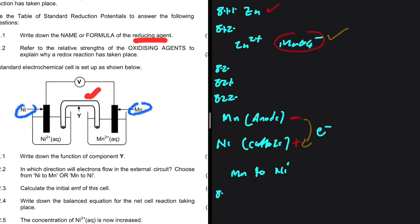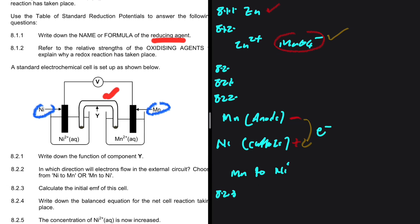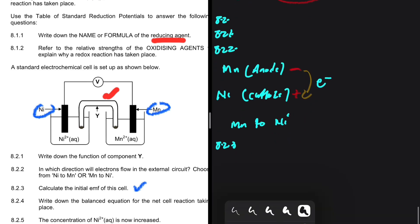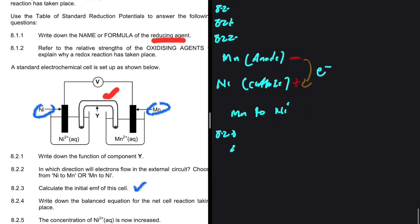8.2.3. We're supposed to calculate the initial EMF of the cell. So let's go ahead and do that. The initial EMF of the cell will equal the reduction potential at the cathode minus the reduction potential at the anode.